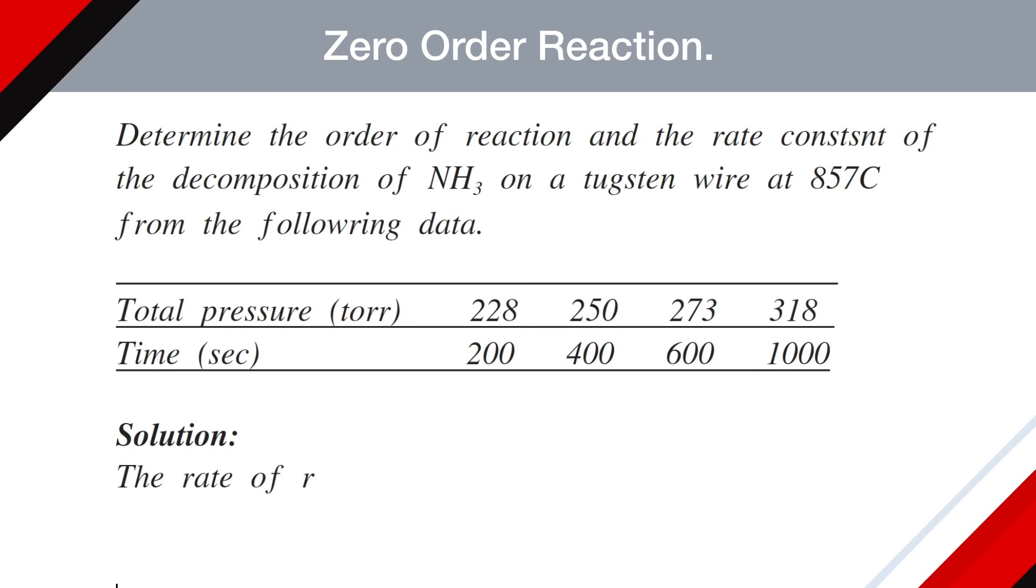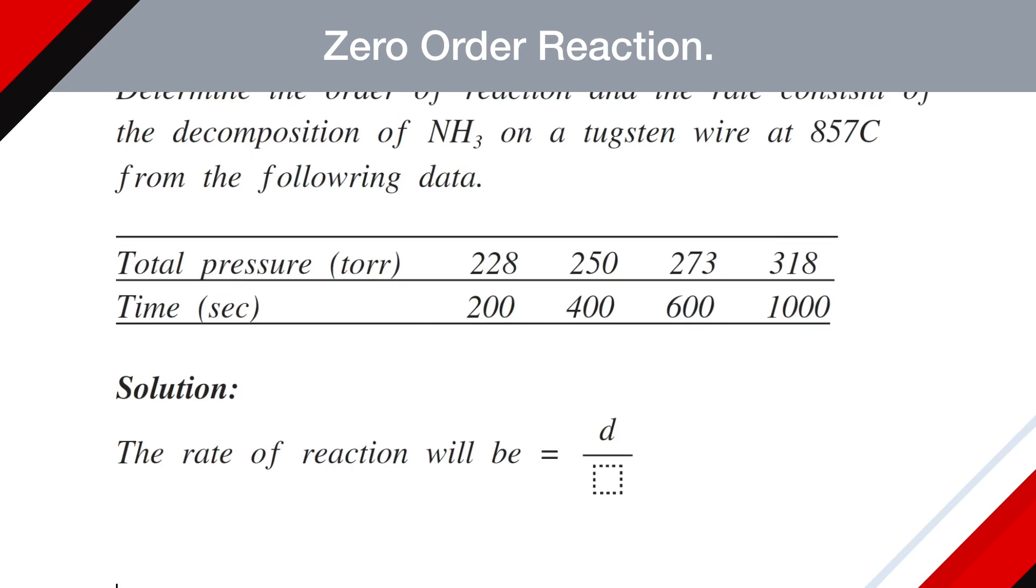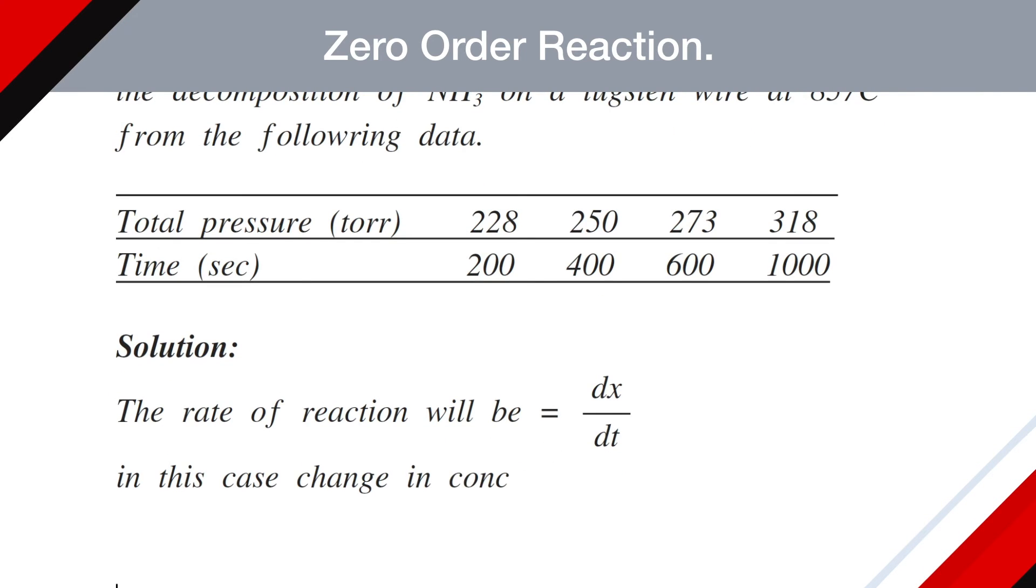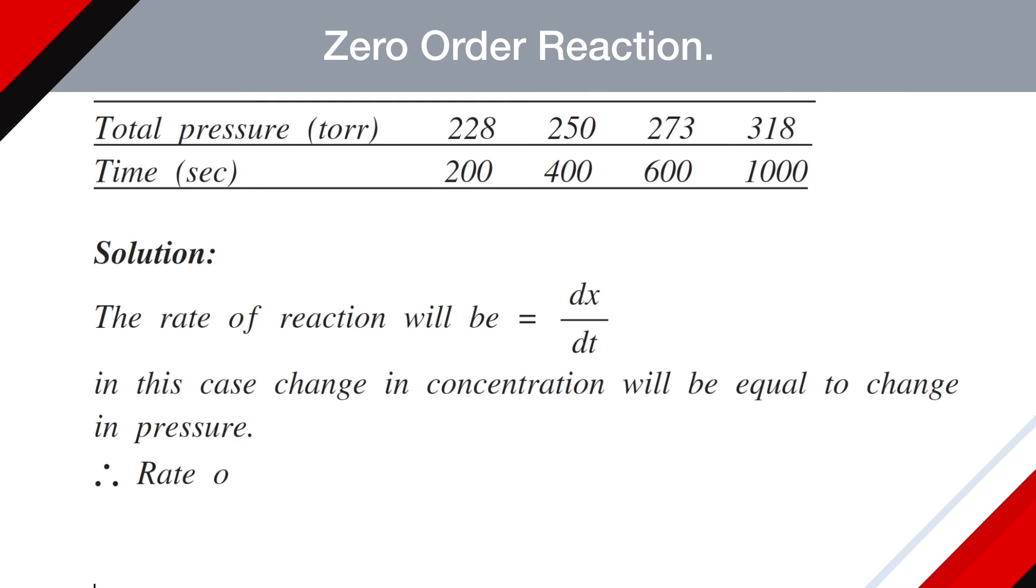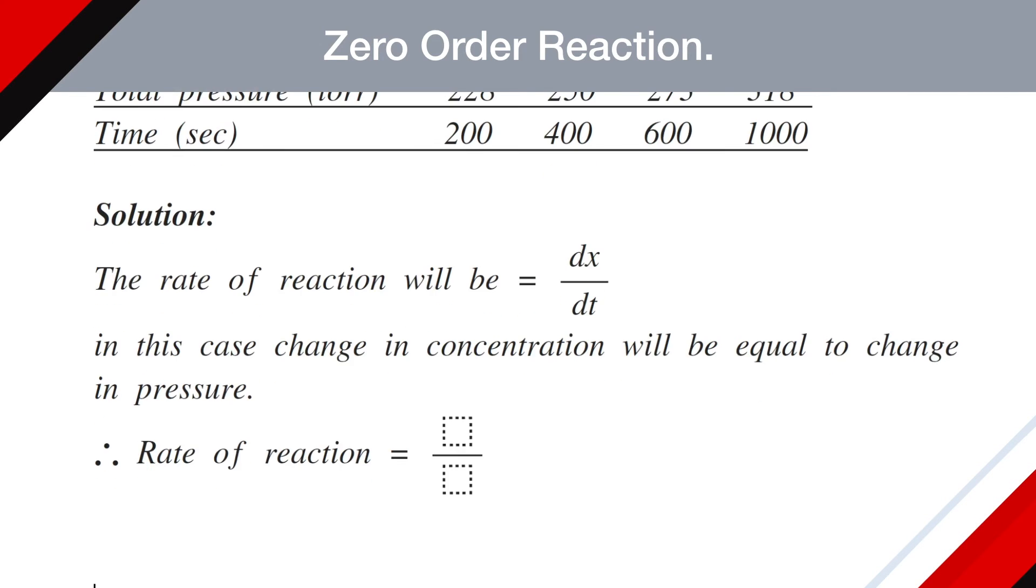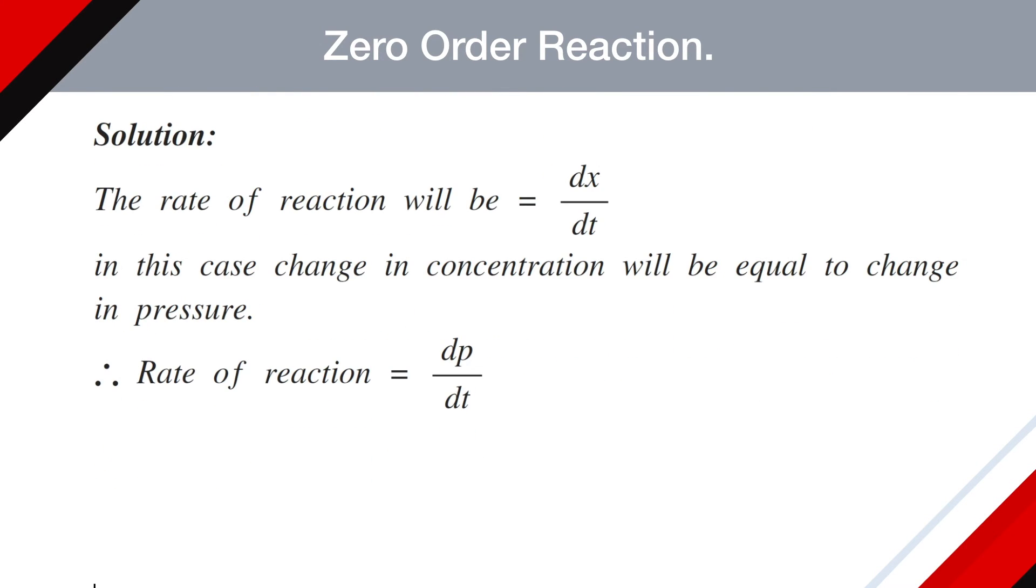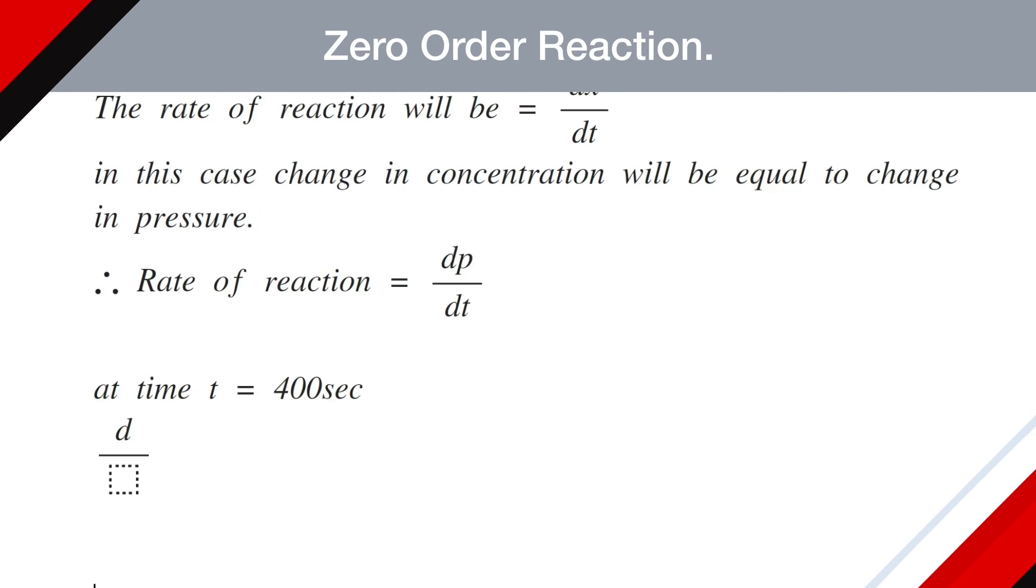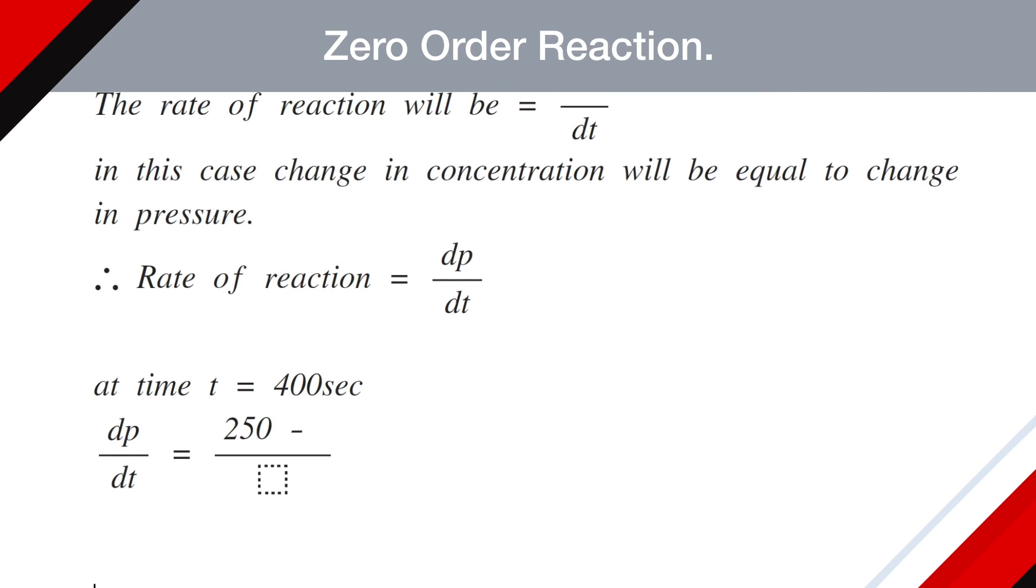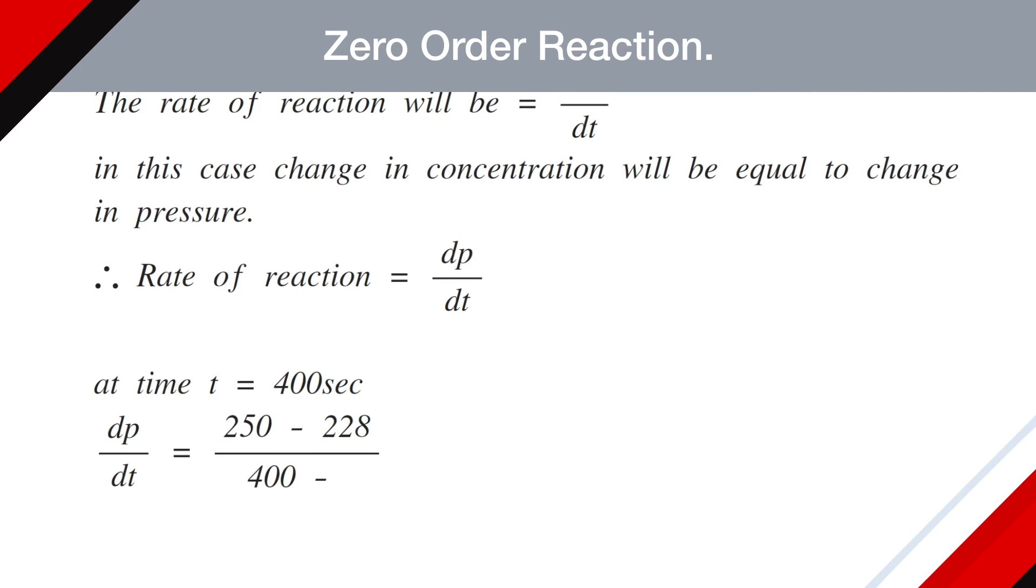The rate of reaction will be dx/dt. In this case, change in concentration will be equal to change in pressure. Therefore, rate of reaction becomes dp/dt where dp is change in pressure. At time t equals 400 seconds, dp/dt equals 250 minus 228 divided by 400 minus 200, which is 22 divided by 200. It comes 0.11.